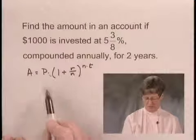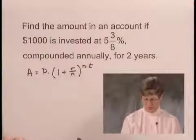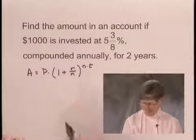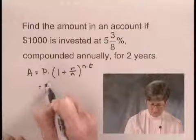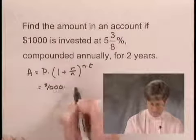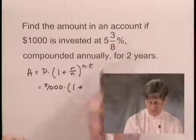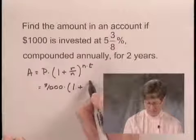So we need to substitute into this formula and then do the computation to find the amount in the account. We know that the principal is $1,000. We'll multiply this times 1 plus the interest rate is 5 3/8 percent.